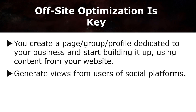This is because online users around the globe have at least two of the previously mentioned social network accounts. You either create a page, a group, or a profile dedicated solely to your business and start building it up using content from your website. This way, you're generating views by linking your main site to these platforms, allowing your links to be shared to users. Your traffic will rise and slowly your site will present an authoritative figure for Google.